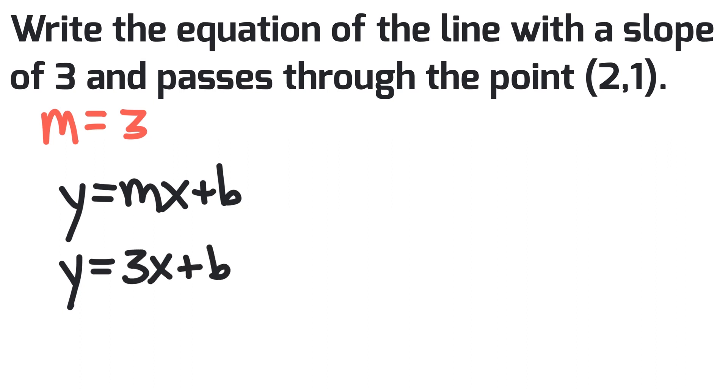So now that I have that, the question says it passes through the point (2,1). So I have an x value and a y value. That's an ordered pair or a coordinate point. So I can literally take those x and y components and substitute those into my equation. Here you see the y value is 1 equals 3 times the x value which is 2 plus b.